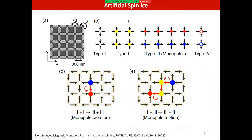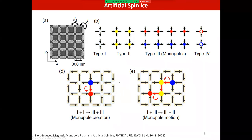In artificial spin ice, we can build these spin configurations using nanomagnets arranged in a square lattice with a gap between magnets and horizontal and vertical bar magnets placed in the lattice. Compared to square ice, in artificial spin ice all 16 configurations become possible, and you can observe exotic behaviors like type-3 vertices called monopoles — you can create monopoles in the lattice and follow their motion through the system.